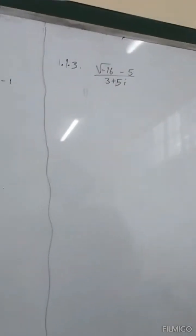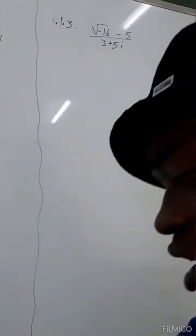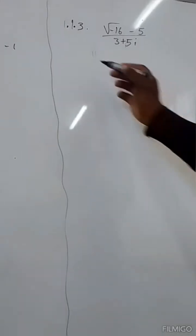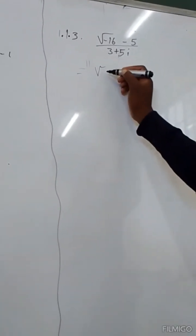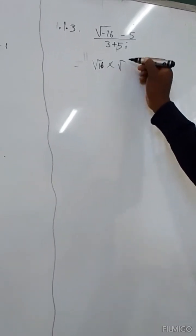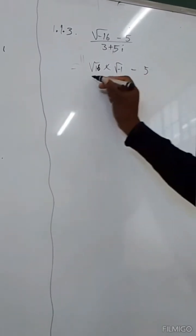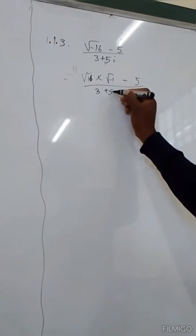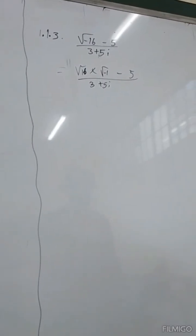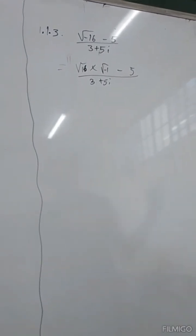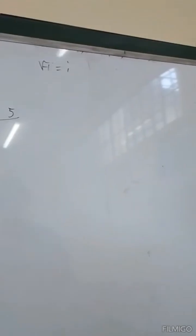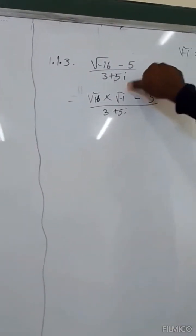If you find square root of negative 16 on your calculator, it will give you an error. So we are going to do it like this: square root of 16 times square root of negative 1, minus 5, divided by 3 plus 5i. You find square root of 16 on your calculator, which is 4. There is a rule that states square root of negative 1 equals i, so we replace square root of negative 1 with i.